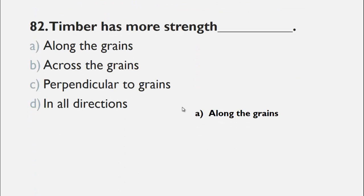MCQs number 82 is, timber has more strength a along the grain, b across the grain, c perpendicular to the grain and d in all direction. Timber has more strength along the grain. So, the right choice for this question is a along the grains.